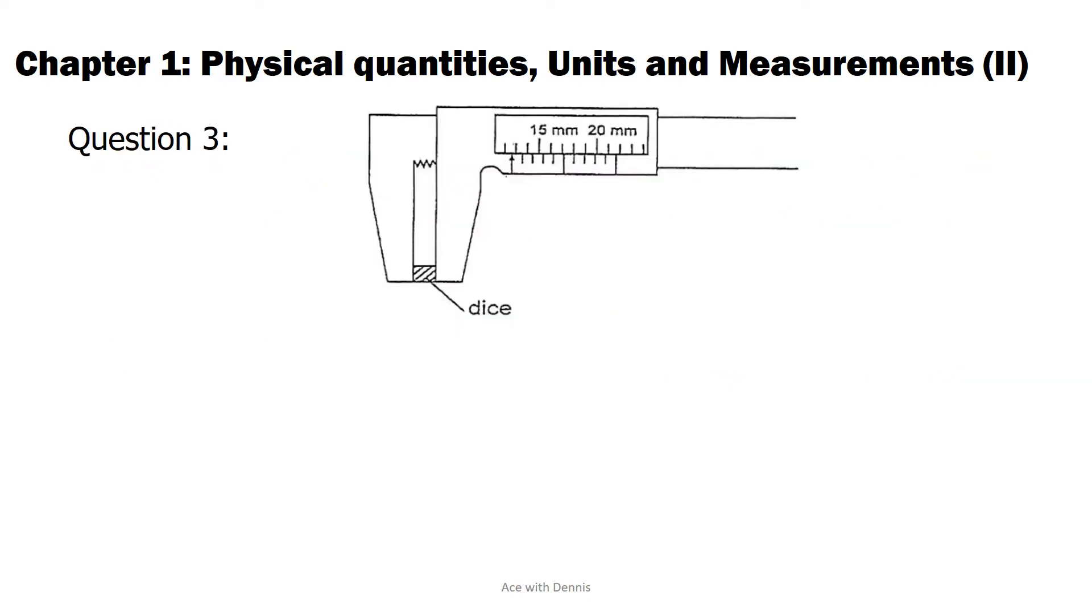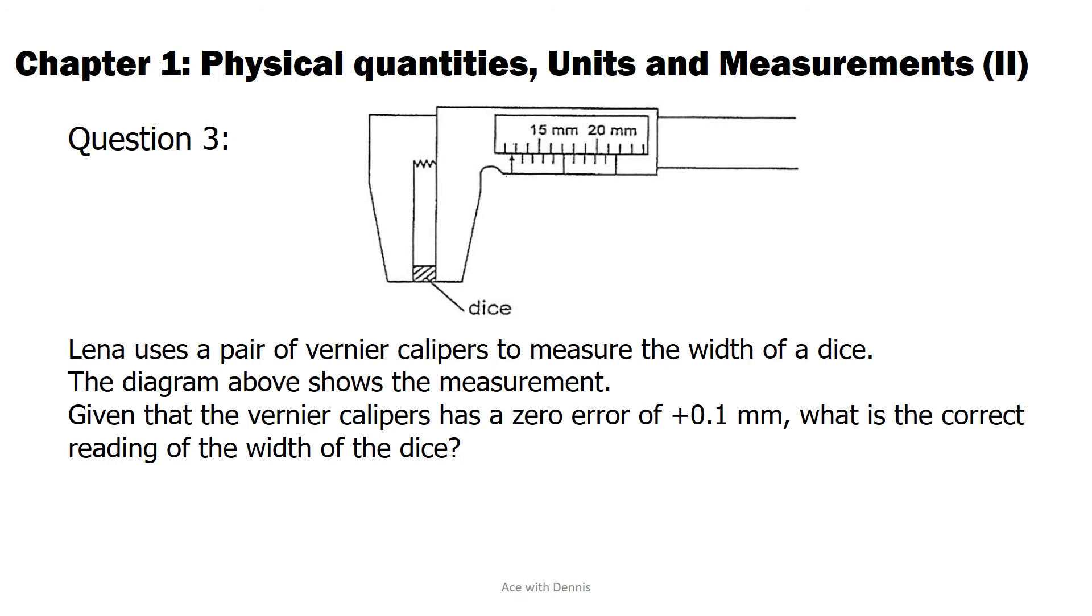Question 3. Lina uses a pair of Vernier Calipers to measure the width of a dice. The diagram above shows the measurement. Given that the Vernier Calipers has a zero error of plus 0.1 millimeters, what is the correct reading of the width of the dice?